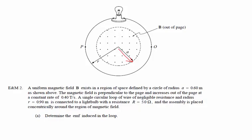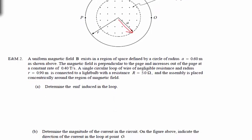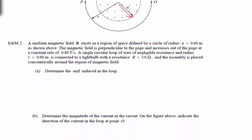The first thing being asked for is the EMF induced in the loop. Faraday's law gives us the magnitude of the induced EMF — the magnitude of this induced voltage is the magnitude of the rate of change of the magnetic flux with respect to time.